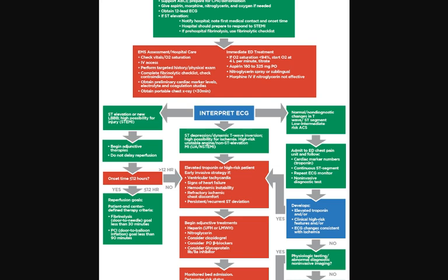Begin adjunctive treatments including heparin (UFH or LMWH) and nitroglycerin. Consider clopidogrel, PO beta blockers, and glycoprotein inhibitors. Then monitor with bed admission, determine risk status, and continue heparin, ASA, and other therapies including statin therapy, ACE inhibitor or ARB. Involve cardiology to risk stratify if not at high risk.